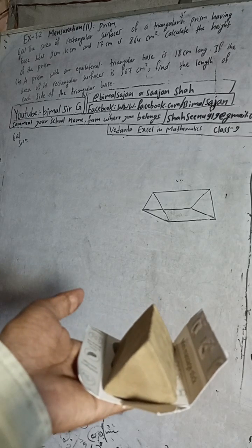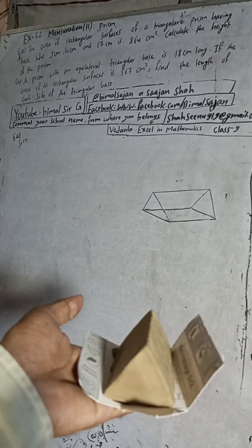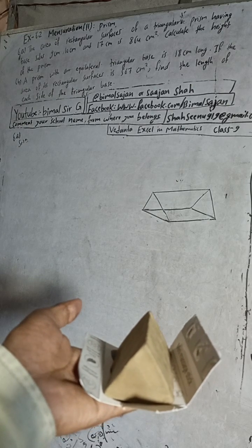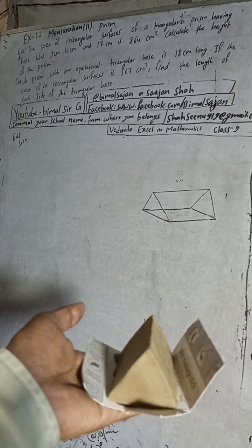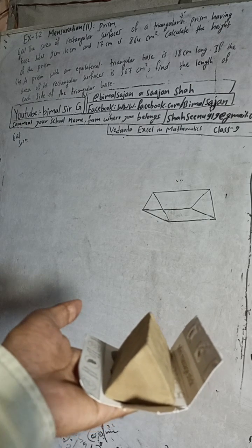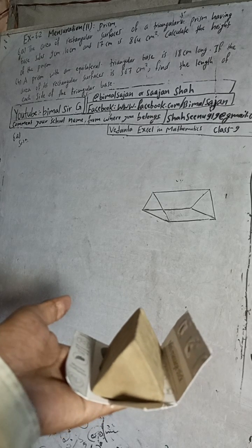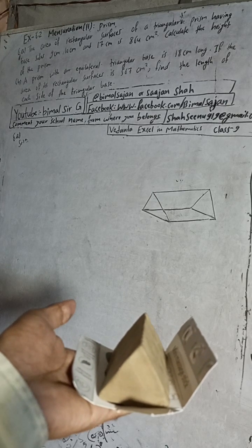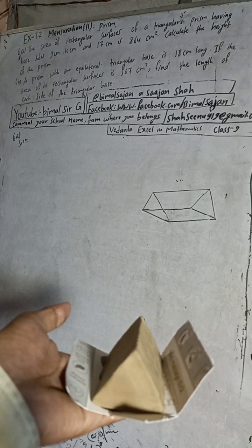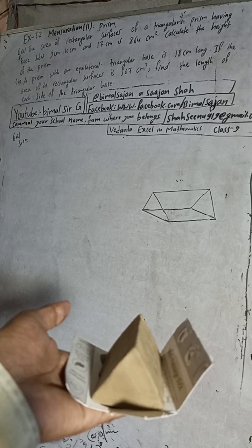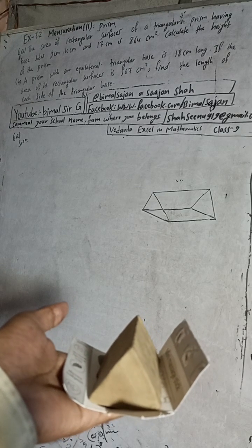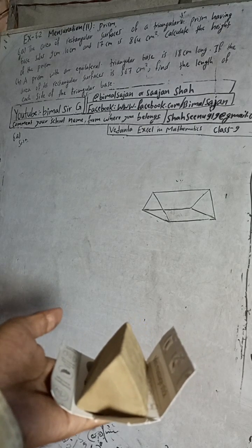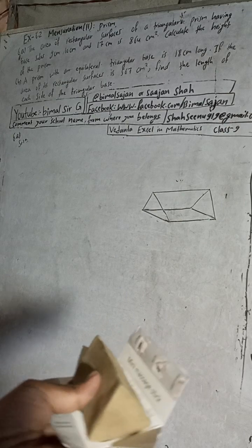Hi class 9 and 10 students, welcome back to Bimal Sarji's YouTube channel. This is question number 6A, exercise 6.2, mensuration, second part — prism. The question is: the area of rectangular surfaces of a triangular prism having base sizes 9 cm, 10 cm, and 17 cm is 864 cm². Calculate the height of the prism.